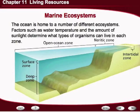The ocean is home to a number of different types of ecosystems. Factors such as water temperature and the amount of sunlight determine what types of organisms can live in each zone. In the deep ocean zone, very little light penetrates, so the types of organisms that live there are typically decomposers who survive off the remains of dead and dying organisms that sink to the bottom. The open ocean zone has a multitude of different organisms, usually larger scale organisms like whales and dolphins. As you get into the neurotic and the intertidal zone, the amount of sunlight is quite high, so the diversity of life in those areas flourishes.